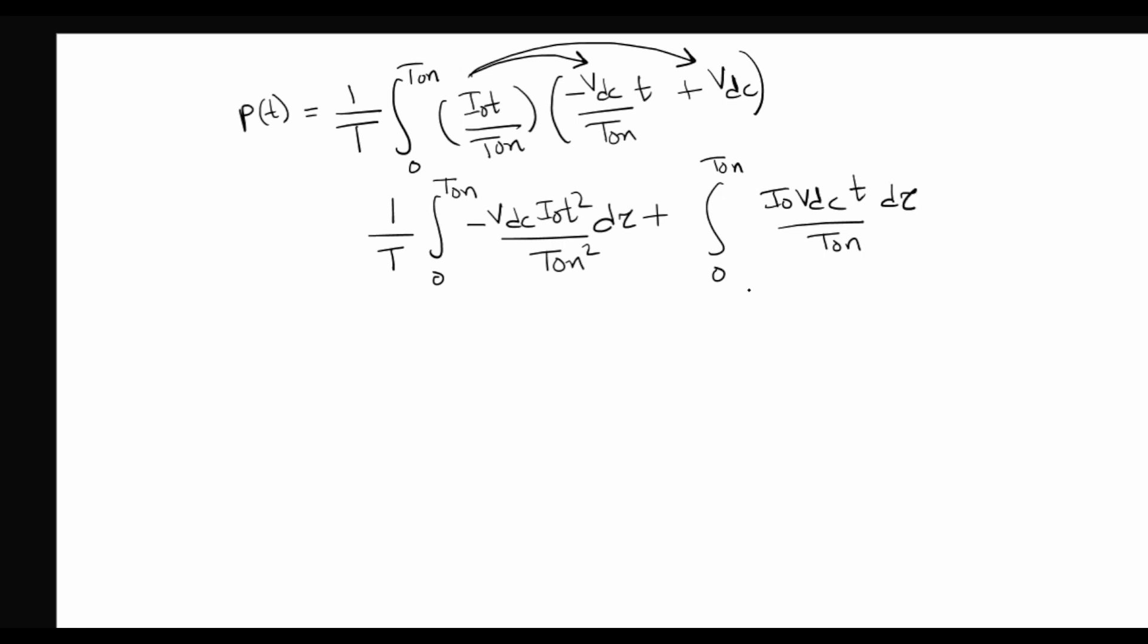If we perform the integration, this would come out as t cubed over T on squared, and the limits 0 to T on, plus I0 times VDC times t squared over 2 T on, and the limits are again 0 to capital T on.